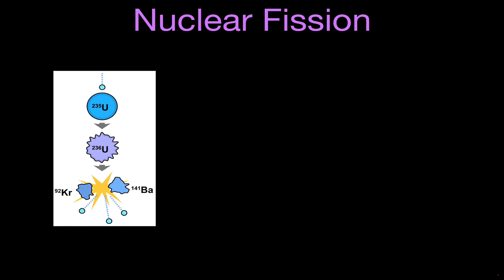This diagram shows an example of neutron bombardment. Here is the neutron bombarding uranium-235. When that neutron bombards uranium-235, it can be absorbed and becomes momentarily uranium-236, which is unstable, and it will split. In this case it splits into krypton-92 and barium-141. It will release three more neutrons, and this is the energy that is released — the energy we're usually after when we do this nuclear bombardment.